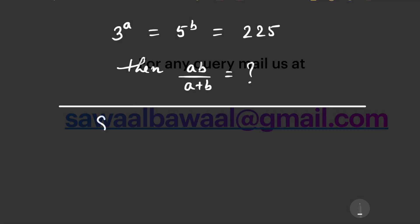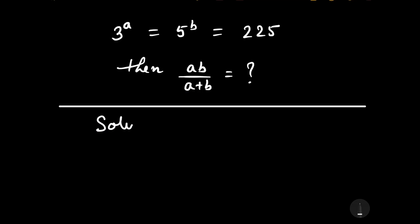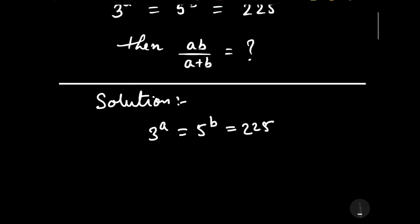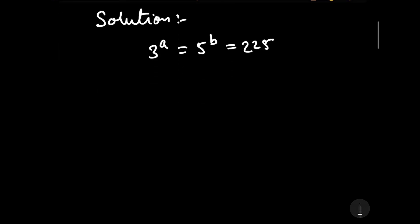Now let us start to solve this question. Our question is 3 to the power A is equal to 5 to the power B is equal to 225. We will solve this question by two different methods. Let us try Method 1.